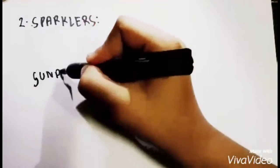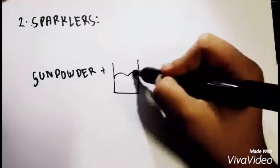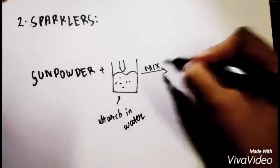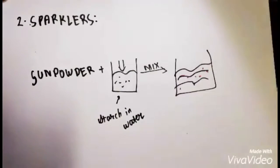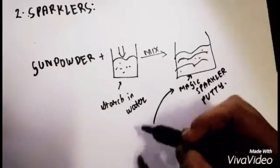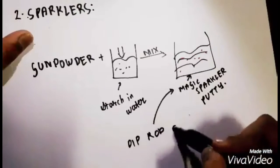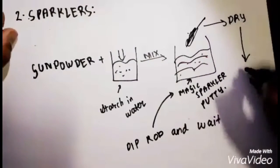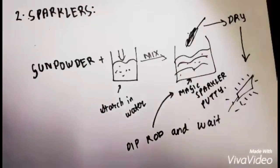But how is a sparkler made and how does it work? To make a sparkler, you need to mix gunpowder with some starch in water paste. That would give you another mixture, the magic sparkler paste. Once you have this paste ready, you dip your thin rod inside this paste and let the mixture dry over the thin rod. Once it dries, there you have it. Your basic sparkler is ready.